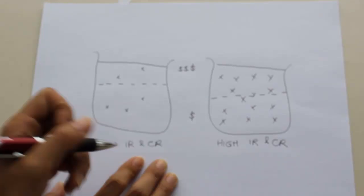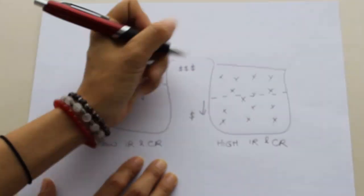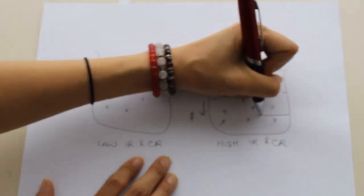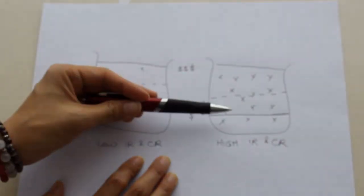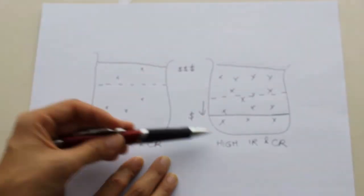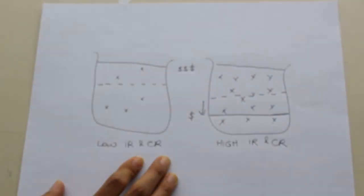So in a high inherent risk and control risk situation, I'm going to lower my materiality level to detect greater numbers of misstatements because there's a higher risk of material misstatements within the financial statements.